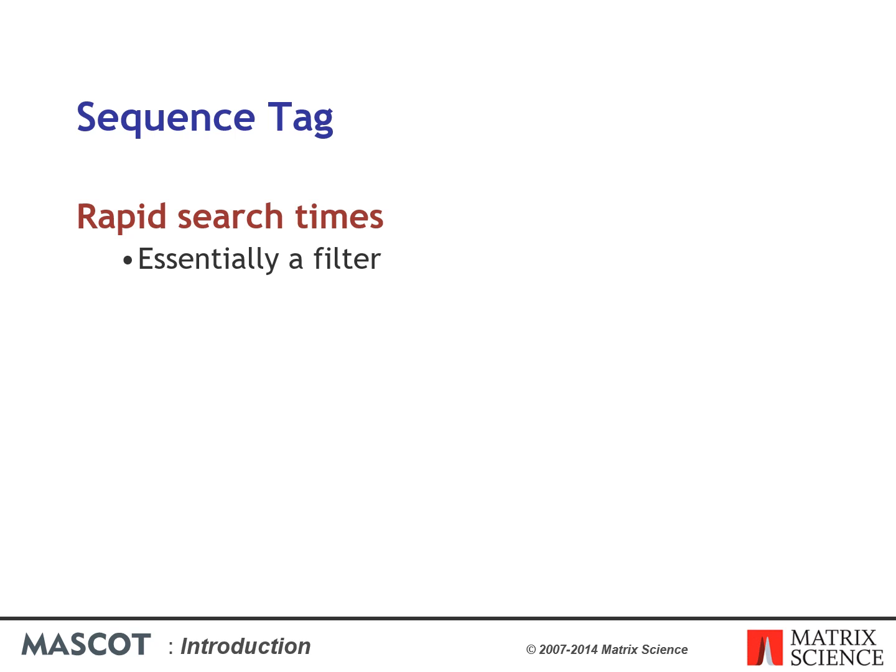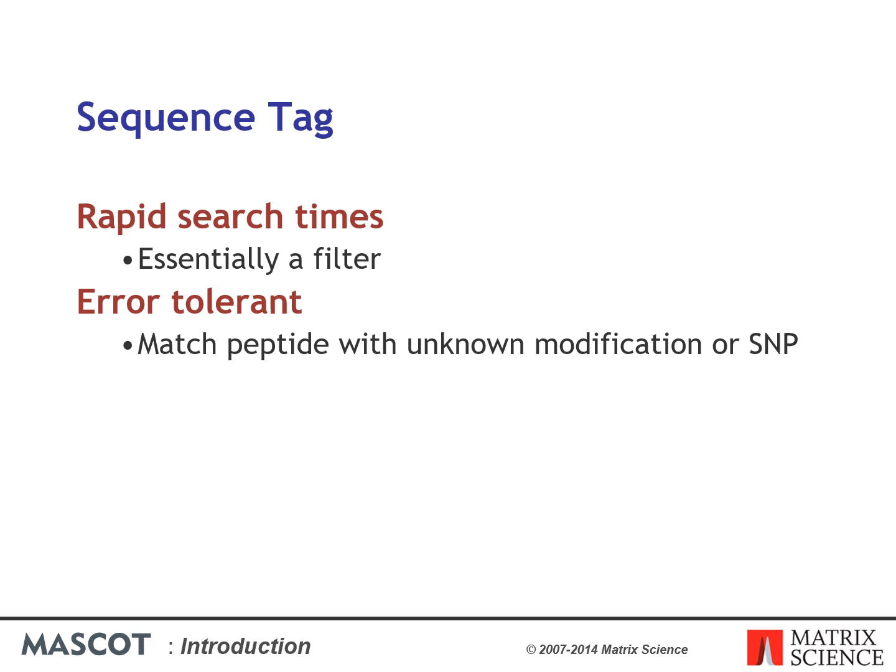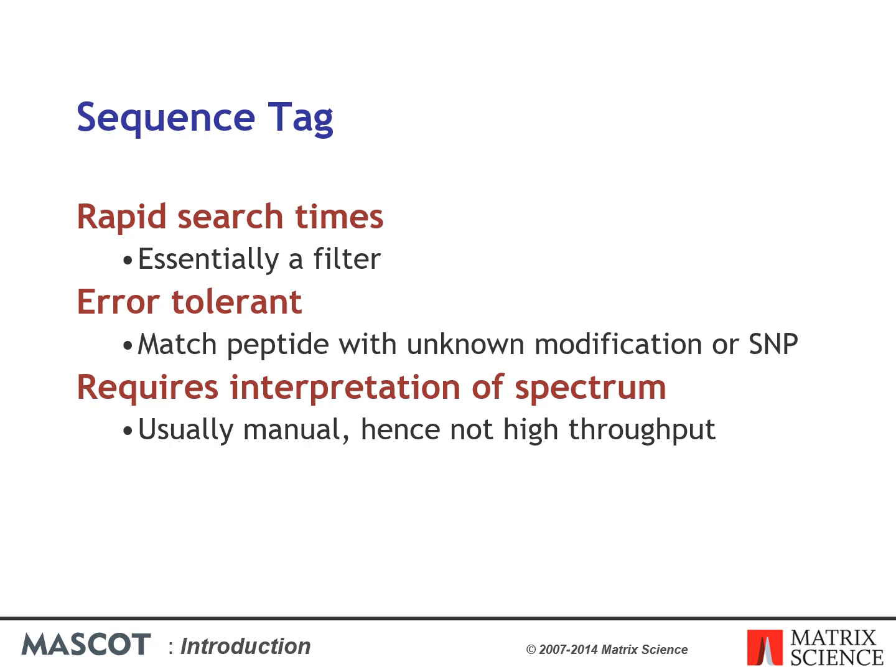A sequence tag search can be rapid because it is simply a filter on the database. However, the standard sequence tag is essentially obsolete — it is easier and more reliable to skip the interpretation step and pass the peak list to the search engine. The reason the sequence tag is still important is because it can be used in an error-tolerant mode, which consists of relaxing the specificity by removing the peptide molecular mass constraint. This is one of the few ways of getting a match to a peptide when there is an unsuspected modification or variation in the primary amino acid sequence. Tags can be called by software, but in many cases they are still called manually, which requires time and skill.